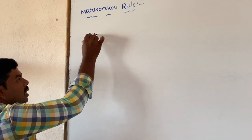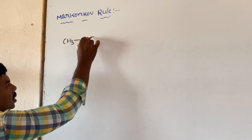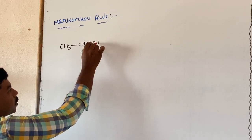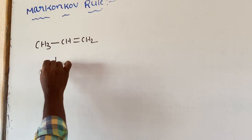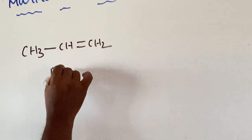Here is propene — CH3-CH=CH2. This is an unsymmetrical alkene.